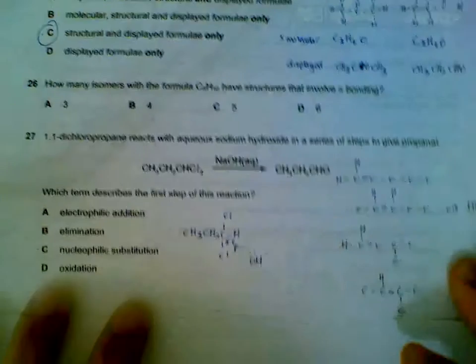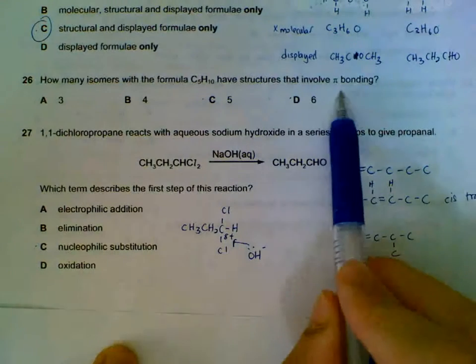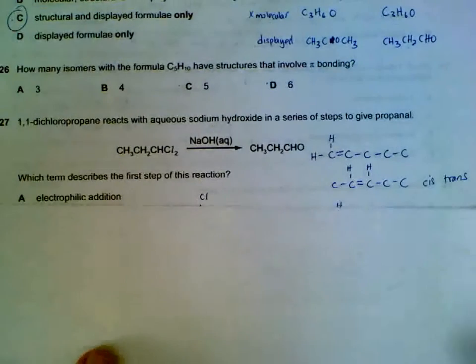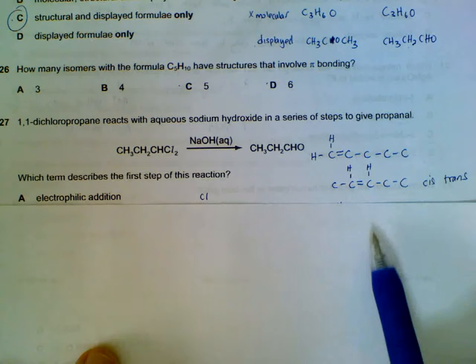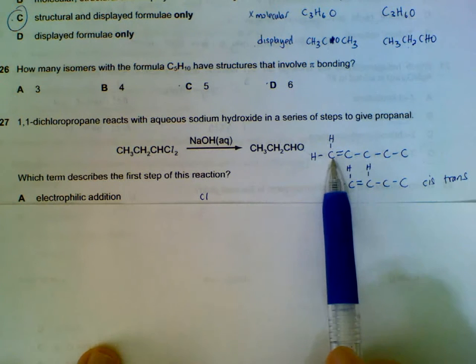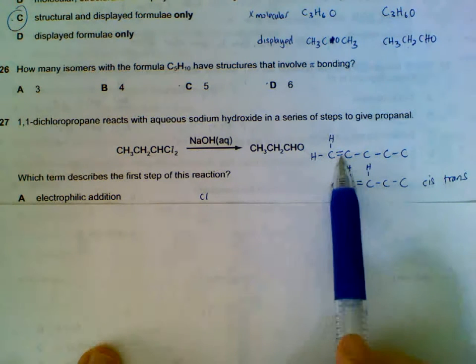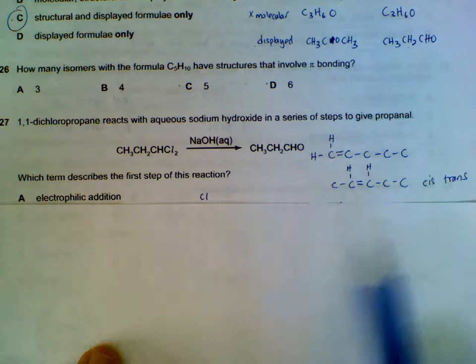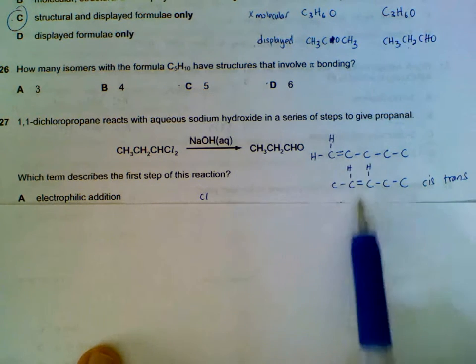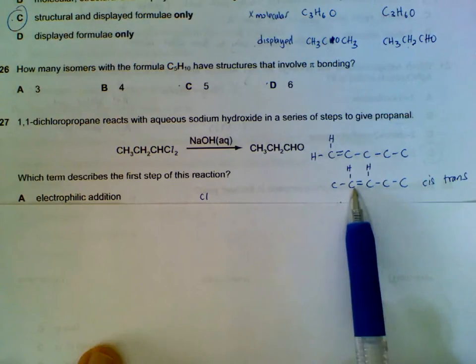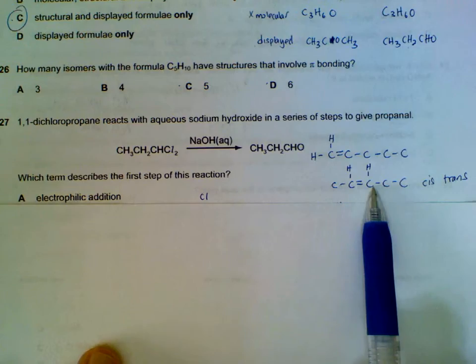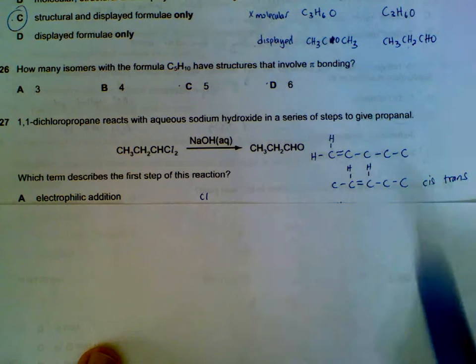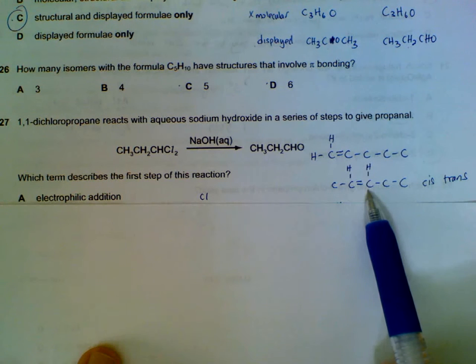26, how many isomers do we have for C5H10 that involve pi bonding? So this is an alkene. We have a few alkenes here. I have drawn them at the bottom. Again I left out some of the hydrogens, focusing just on the double bonds. The straight chain one, the double bond could be here. This one does not have cis-trans because we have two of the same hydrogen. If we move the double bonds inwards, we have a molecule that looks like this. This molecule can have cis-trans. So we have actually three so far. This molecule and this molecule with its cis-trans version.